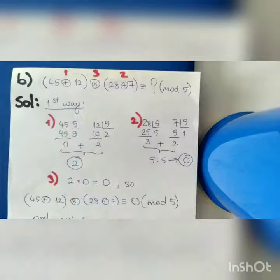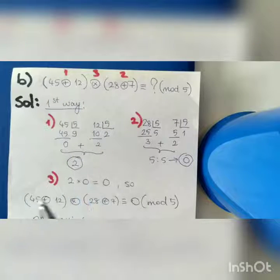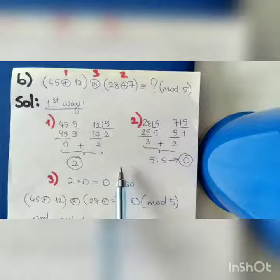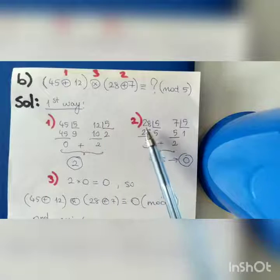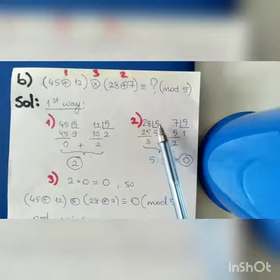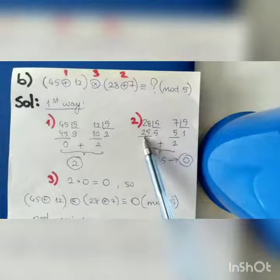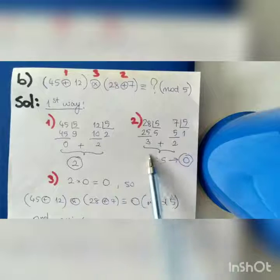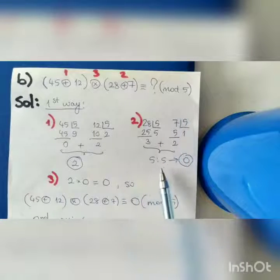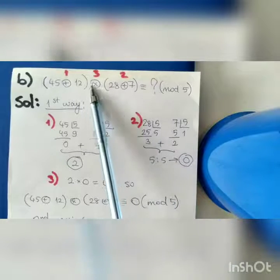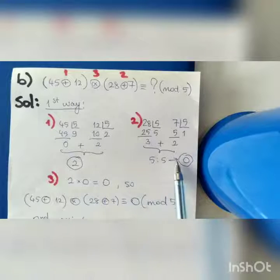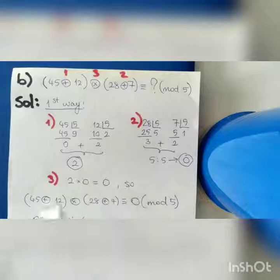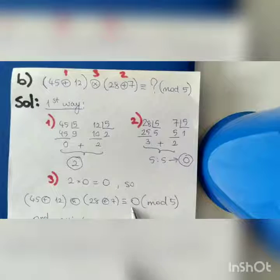For the first braces, the equivalent number of the sum is 2. Then continuing with the same approach for the second braces: 28 divided by 5 is 5 with remainder 3, and 7 divided by 5 is 1 with remainder 2. Adding them gives 5, which is divisible by 5, so the remainder is 0. Between the two braces we have a multiplication sign, so we multiply the two remainders: 2 multiplied by 0 equals 0. The equivalent number of this expression is 0 modulo 5.